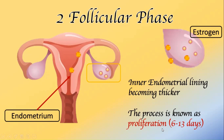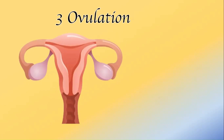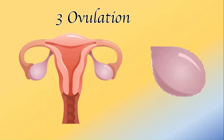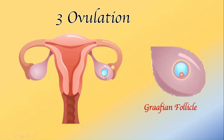The third phase is the ovulation phase. During the follicular phase, nearly 25 to 30 follicles grow in each ovary, but most of them will die and only one follicle becomes a mature follicle, or Graafian follicle. This one follicle, present in the ovary, starts releasing the egg into the fallopian tube. Since the egg or ovum is released into the fallopian tube, this phase is named the ovulation phase.